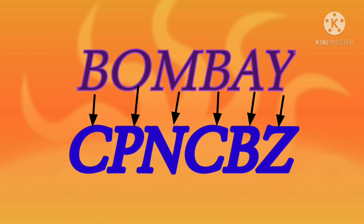Here, Bombay is coded as: B coded as C, O coded as P, M coded as N, B coded as C, A coded as B, Y coded as Z. Here, answer is C, P, N, C, B, Z.